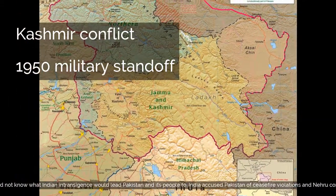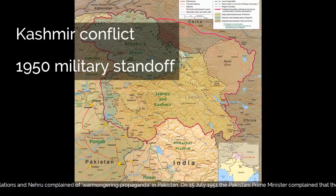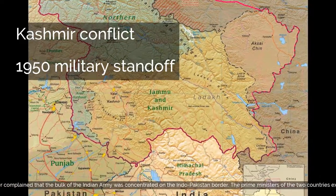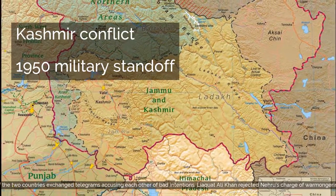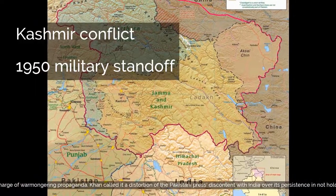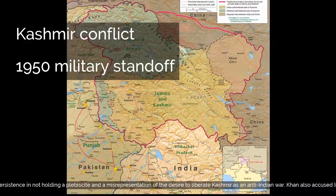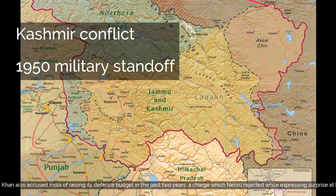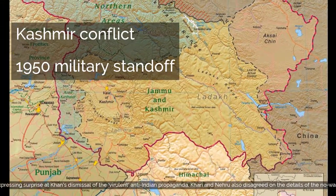On 15 July 1951, the Pakistani Prime Minister complained that the bulk of the Indian Army was concentrated on the Indo-Pakistan border. The Prime Ministers of the two countries exchanged telegrams accusing each other of bad intentions. Liaquat Ali Khan rejected Nehru's charge of warmongering propaganda, calling it a distortion of the Pakistani press's discontent with India over its persistence in not holding a plebiscite, and a misrepresentation of the desire to liberate Kashmir as an anti-Indian war. Khan also accused India of raising its defense budget in the past two years. Khan then submitted a peace plan calling for a withdrawal of troops, settlement in Kashmir by plebiscite, renouncing the use of force, ending war propaganda, and the signing of a non-aggression pact.